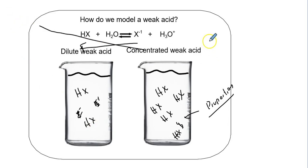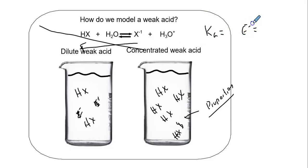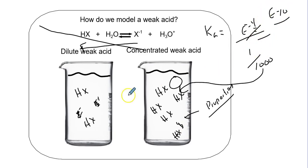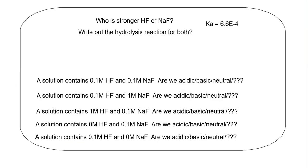If you have a Ka value of, say, 1×10⁻⁴, that's like one in 1,000 - meaning you would need to draw 1,000 molecules to show one actual H+ ion. And that's a fairly strong weak acid. Some Ka values can be as small as 10⁻¹⁰, which means a lot of pictures would be needed to be accurate.